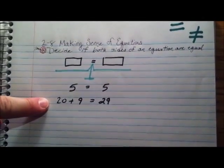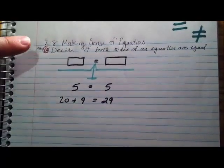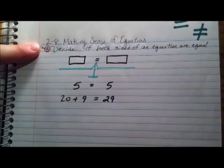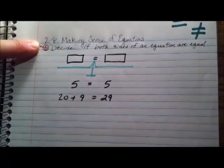So this is probably something that you're more used to. This says 20 plus 9 equals 29. What we're going to do is decide if both sides of an equation are equal. So how do we do that?